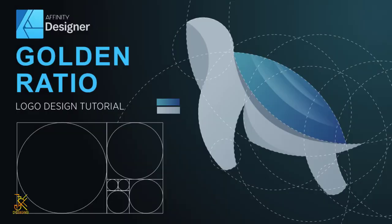Hello and welcome to today's tutorial. In this video I'll be showing you how to create a logo using the golden ratio. This time we are going to be guided by a sketch, and it is really advisable that when using the golden ratio you base on a sketch. Without waste of time, let's jump into Affinity Designer to start with our creation.